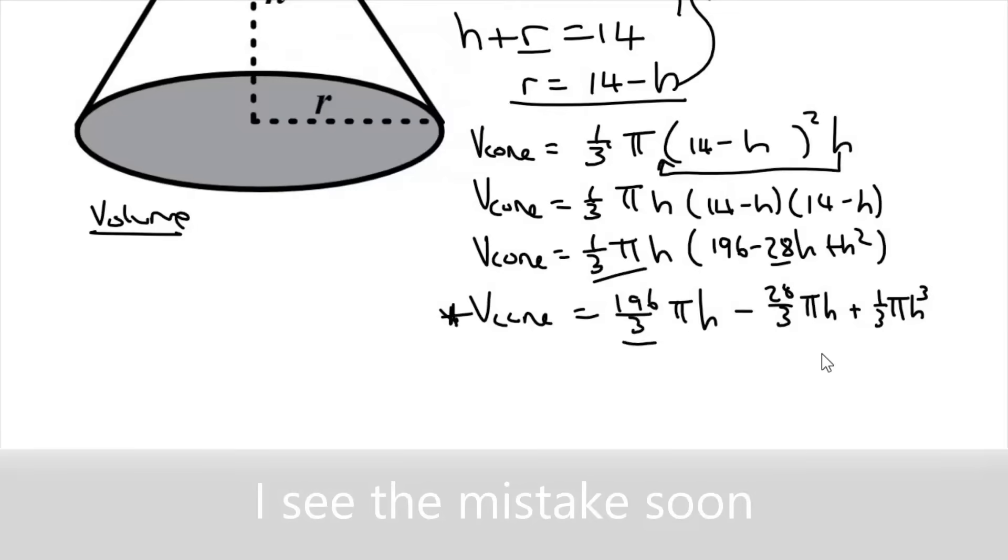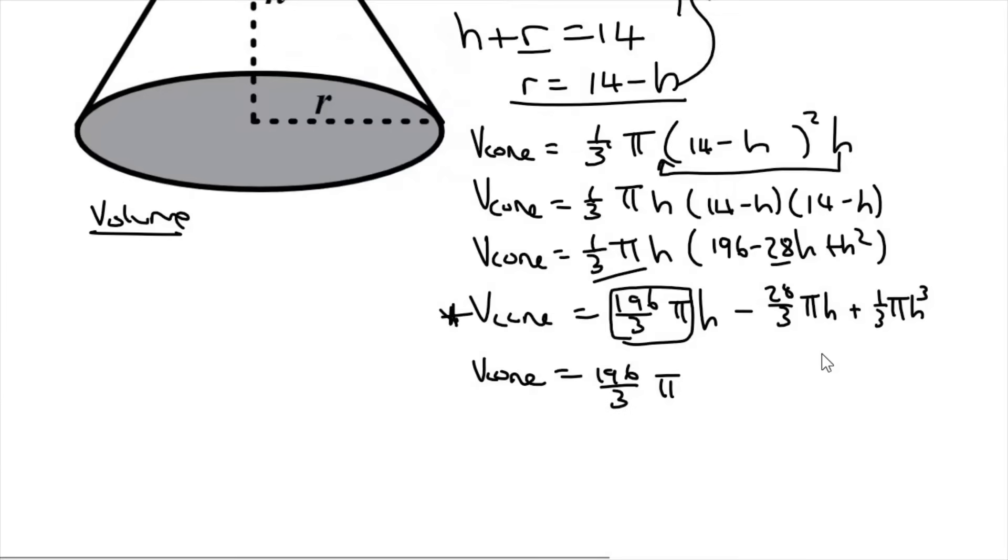Now pi, guys, just think of that as a normal number. Pi is not going to do anything weird. So your volume of your cone is just going to be 196 over three pi, because that h falls away. It's like taking the derivative of 5x. It's just going to be five.